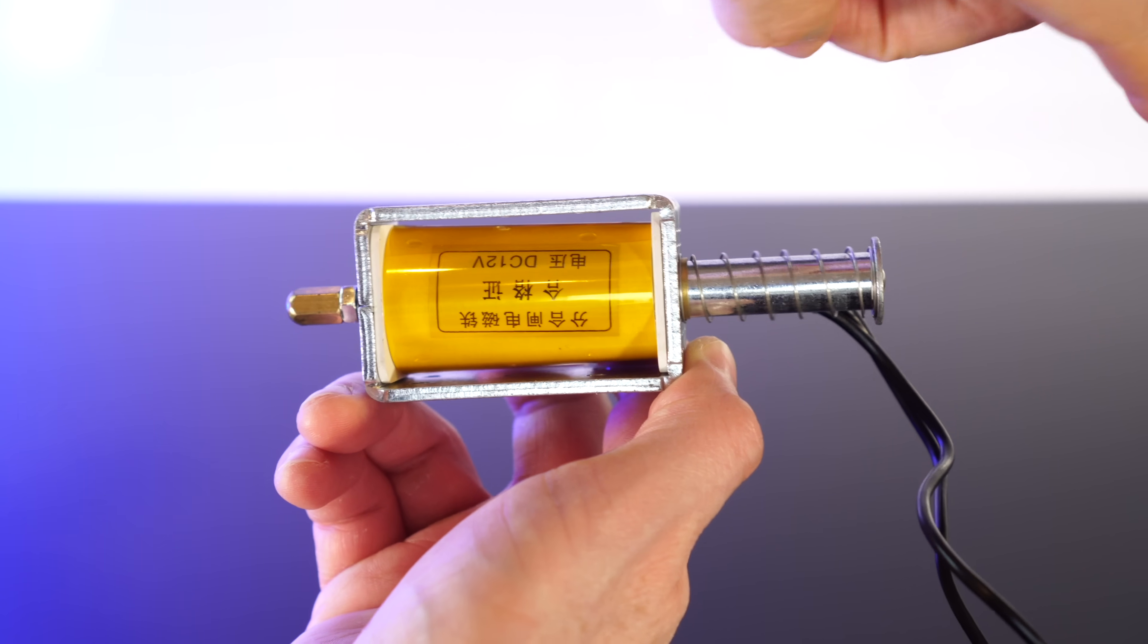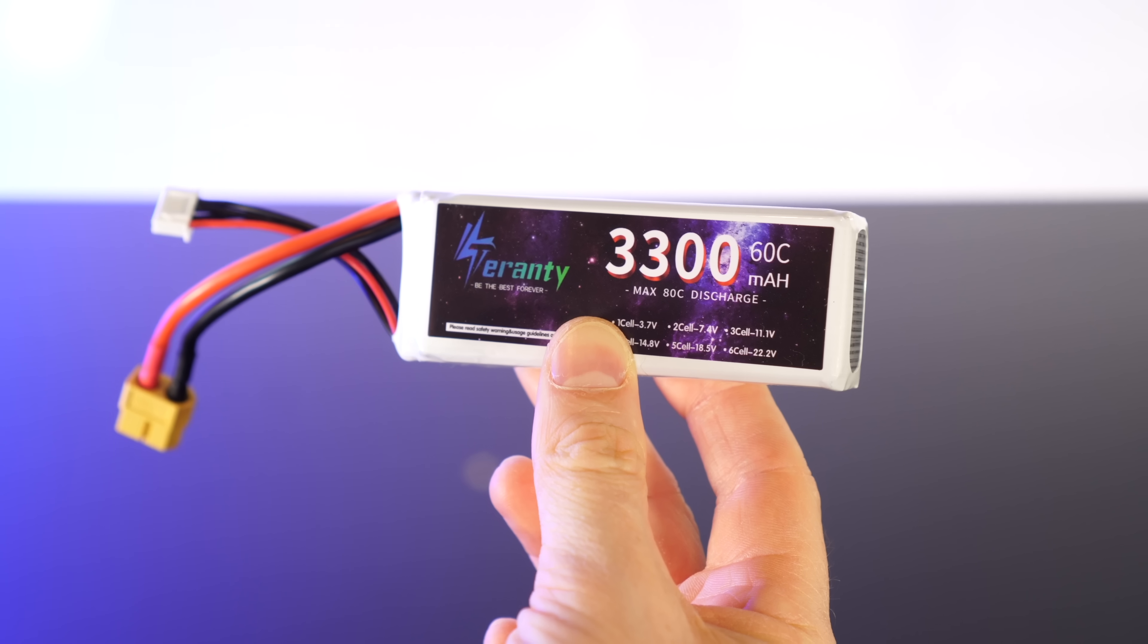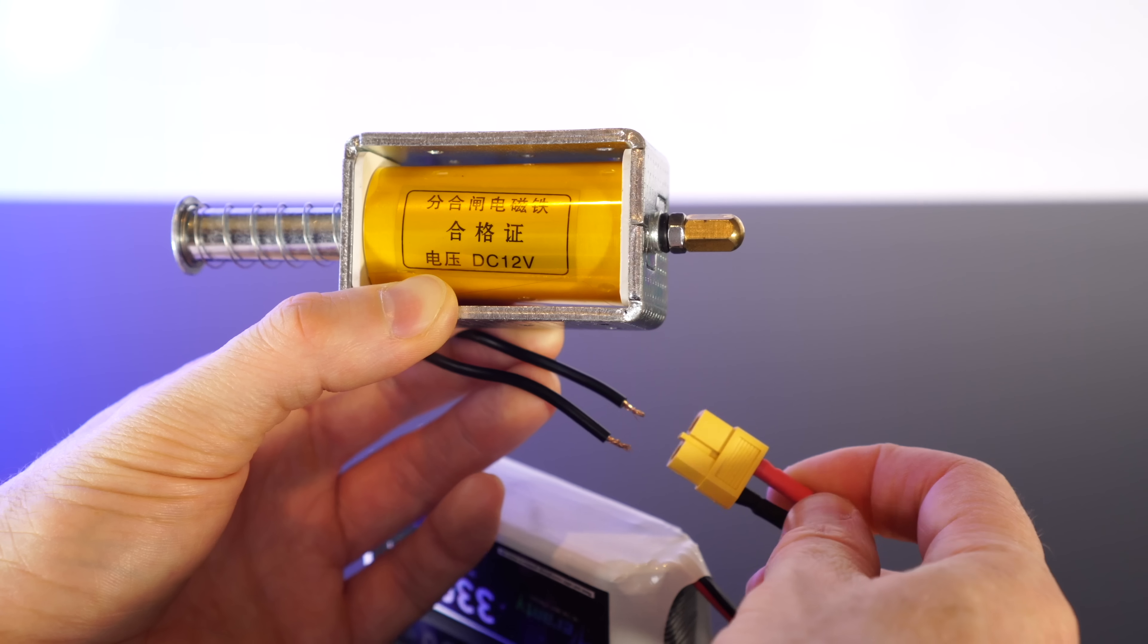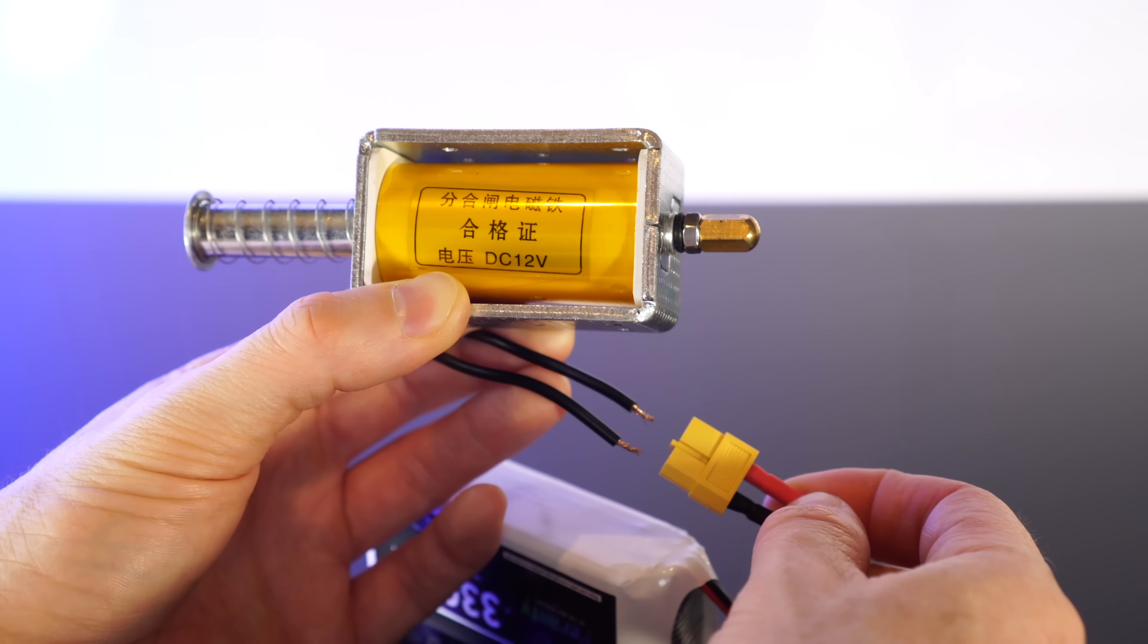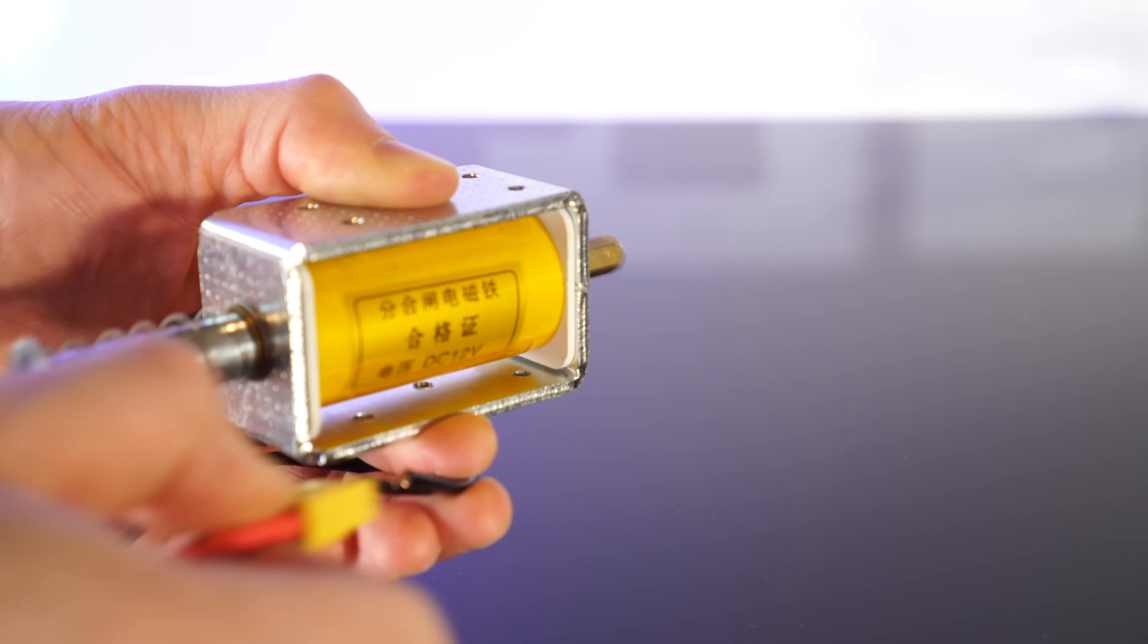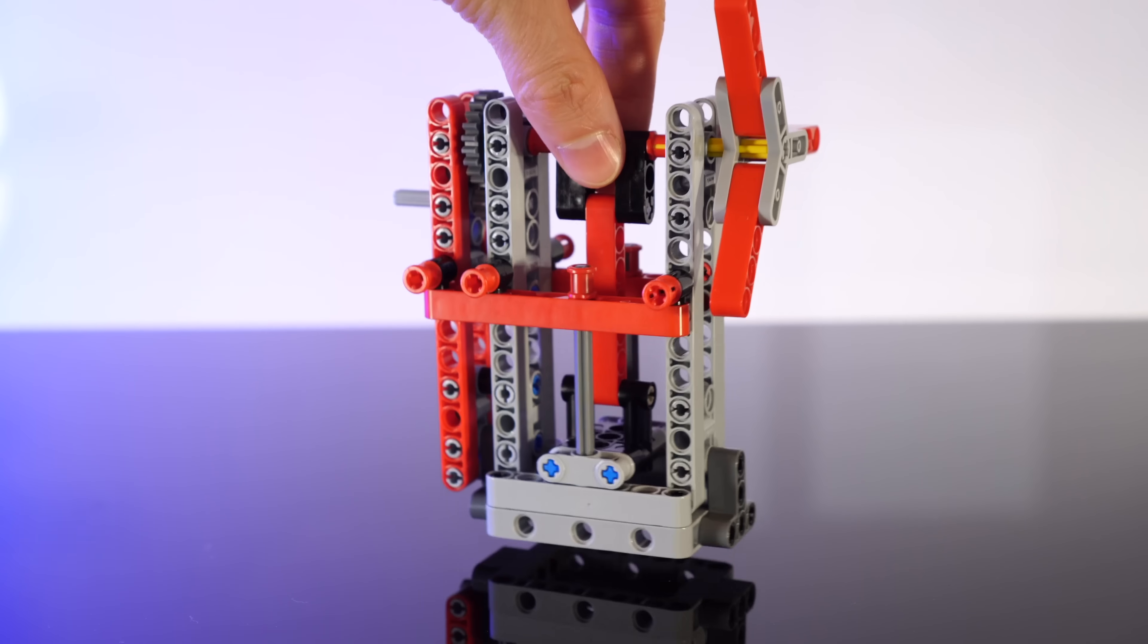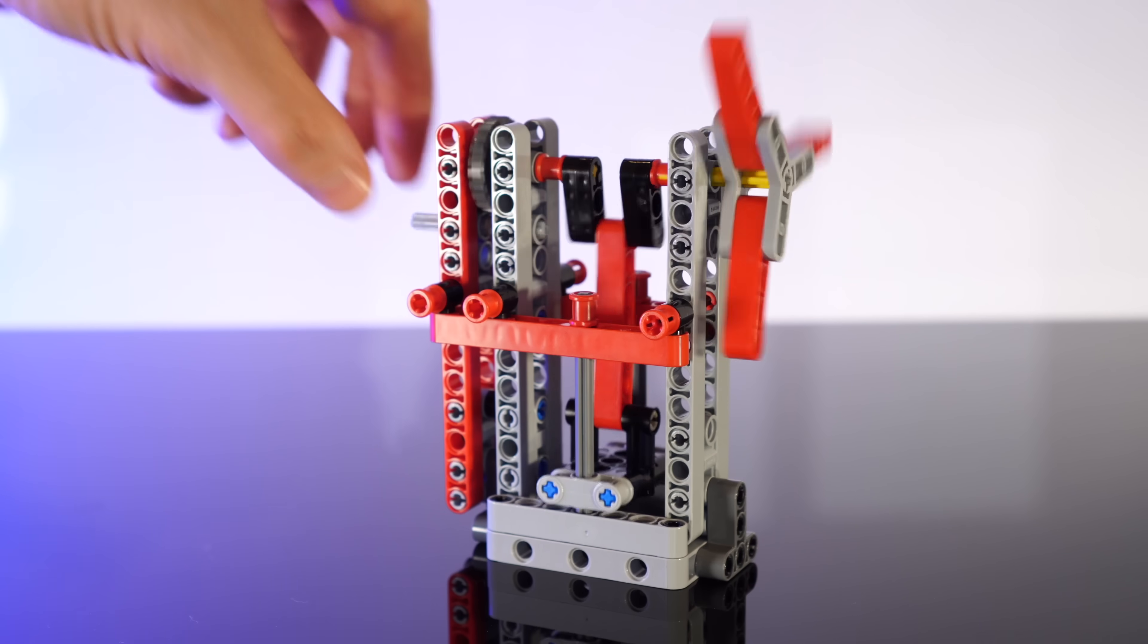Starting with this massive solenoid. Surely this has got to be a big jump from the little one. Well, looks like we'll need this beefy LiPo battery to even get this monstrous thing to run. Whoa! At this stage, I'm not even sure LEGO can handle this solenoid. There's a good chance it'll destroy anything I attach it to. But hey, whatever happens, I guess we'll learn something.